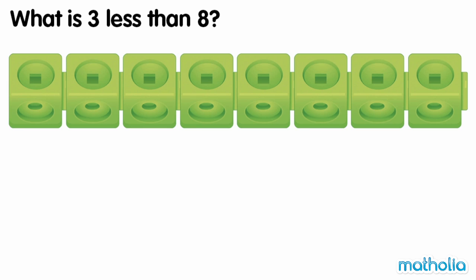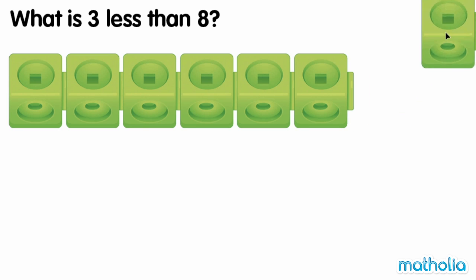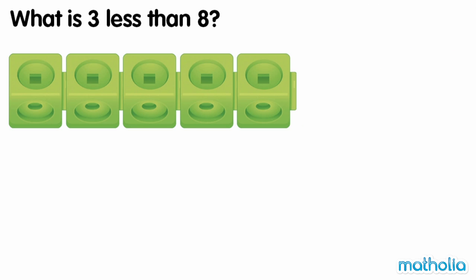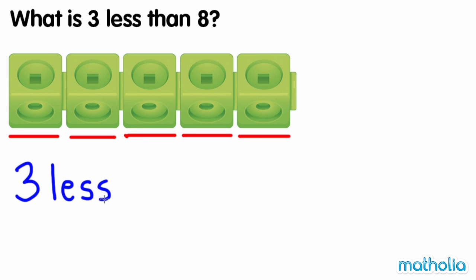What is three less than eight? There are eight cubes in a row. Let's take away three cubes. One, two, three. There are one, two, three, four, five cubes left in the row. Three less than eight is five.